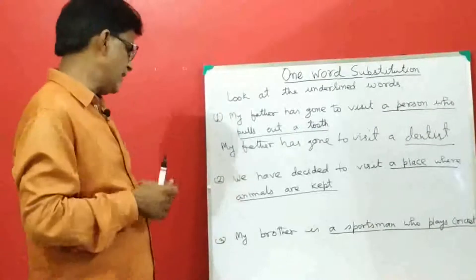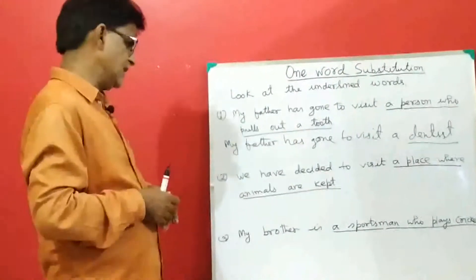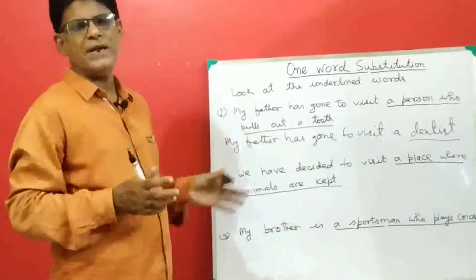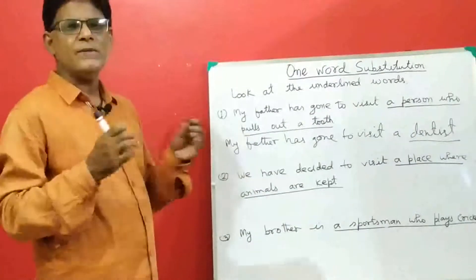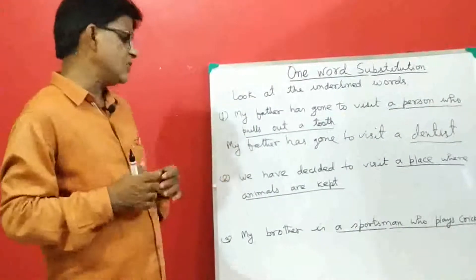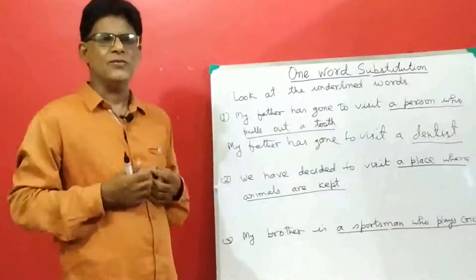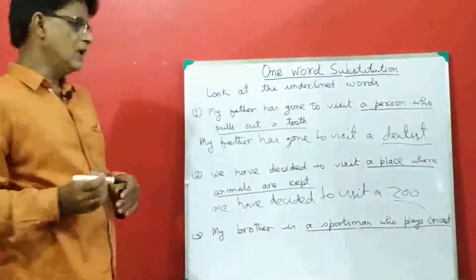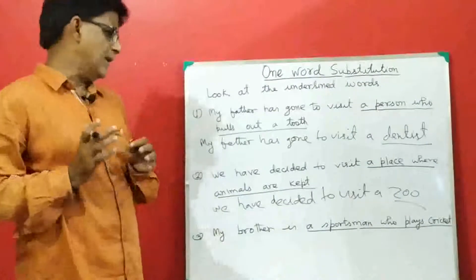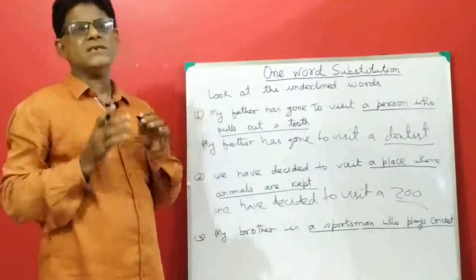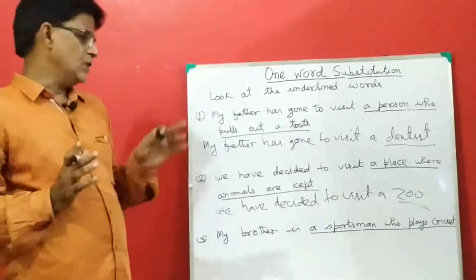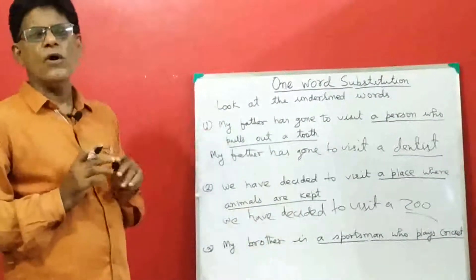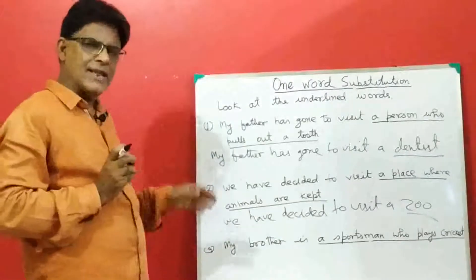Similarly, in the second sentence, the underlined words are 'a place where animals are kept.' Can we replace it? Yes, it can be. A place where animals are kept — naturally we know: zoo. So we can rewrite the sentence. The underlined words 'a place where animals are kept' is replaced with 'zoo.' So 'zoo' is the substitution for that group of words.